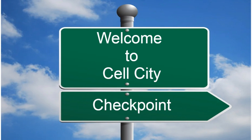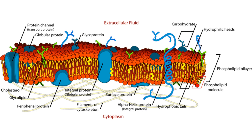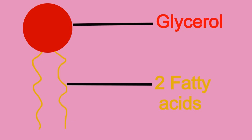We begin our journey with the border of the city, and it is called the plasma membrane. It is selectively permeable, which means that it only lets certain molecules enter and exit the cell. The plasma membrane is mainly composed of phospholipids, which are made up of two fatty acids and a glycerol head.